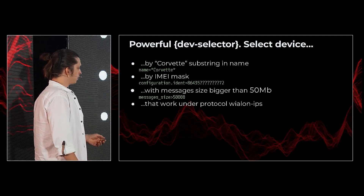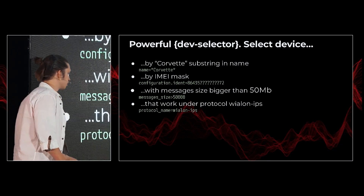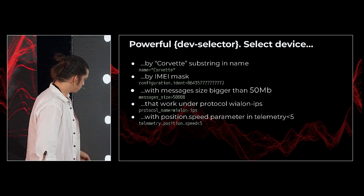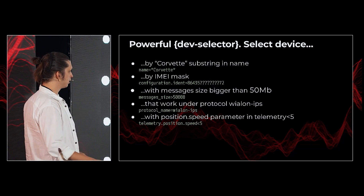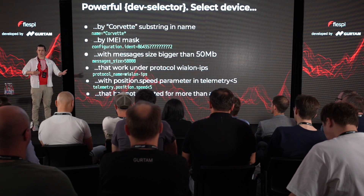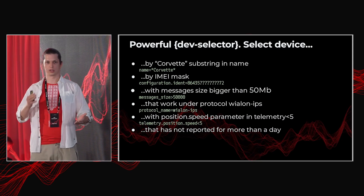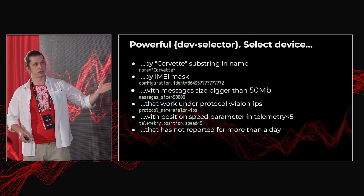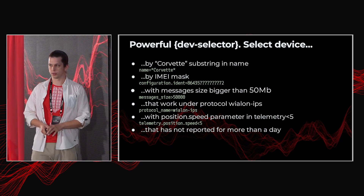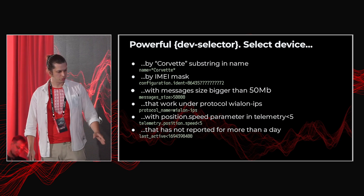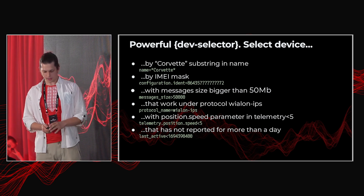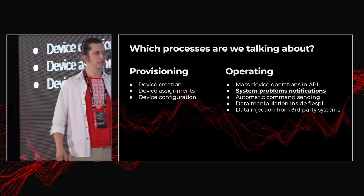You can also select devices by protocol type — for example, protocol name equals 'wialon.' Or by the last known telemetry value: position.speed greater than five or less than five, so all slow-moving devices are returned. And it's not just for viewing — every request that has a dev selector can use it. For example, to update message rotation size for storage, use the selector and all matching devices will be updated. The last example is inactive devices — specify a timestamp in the last active field. Do not underestimate the device selector; it's a very powerful tool.